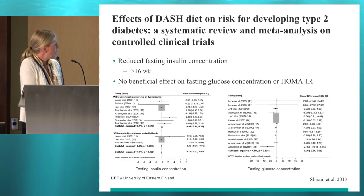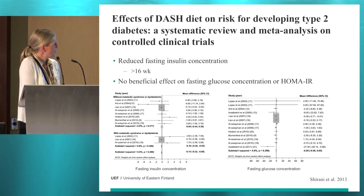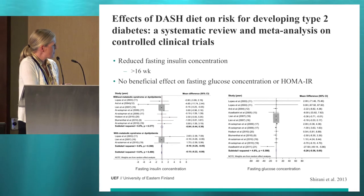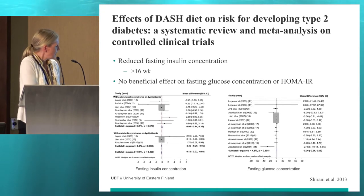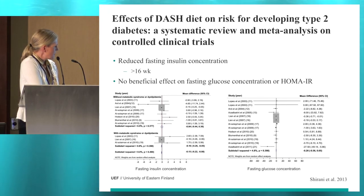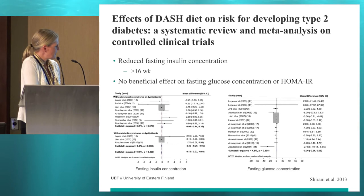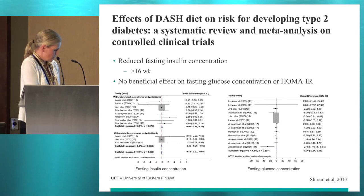Here you see the systematic review by Shirani and co-workers regarding the effects of the DASH diet on risk for developing type 2 diabetes. They found reduced fasting insulin concentration, especially in those studies that lasted for more than 16 weeks. Especially those who had metabolic syndrome or dyslipidemia had protection, but those without any metabolic syndrome or dyslipidemia did not benefit regarding fasting insulin concentration. Regarding fasting glucose concentration, there was no effect, and there was no effect on HOMA-IR either.